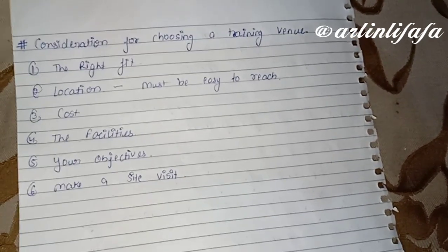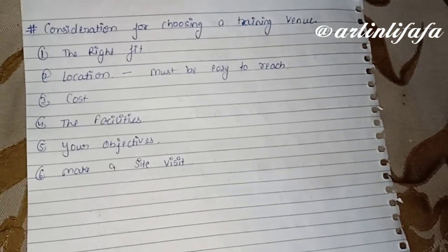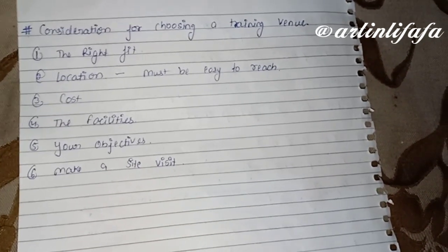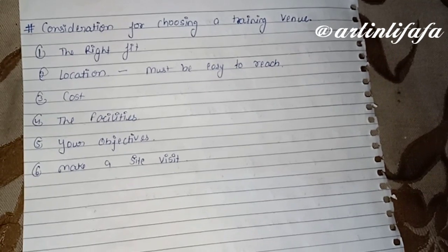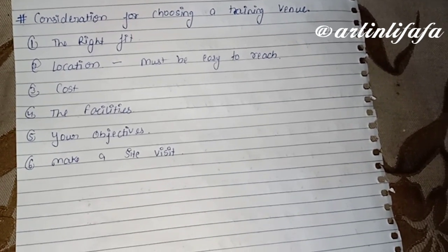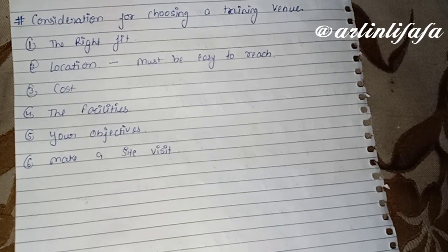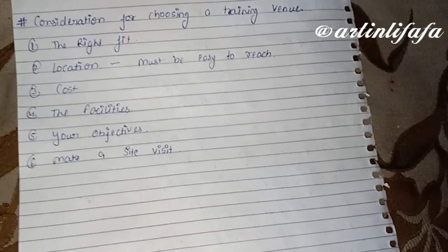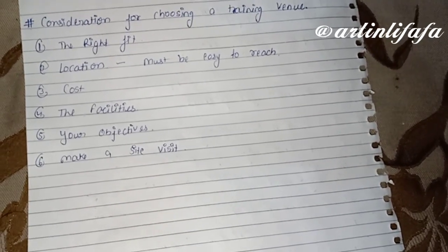Facilities — उस venue पे सारी facilities available हों। Your objective के according वो venue set हो। Make a site visit — always make a site visit whenever there is a training program in your organization or outside, क्योंकि site visit से हमें पता चल जाता है कि हमारा goal achieve होगा या नहीं। So guys, this is all about today's video — if you have any doubt, do let me know in the comment section।